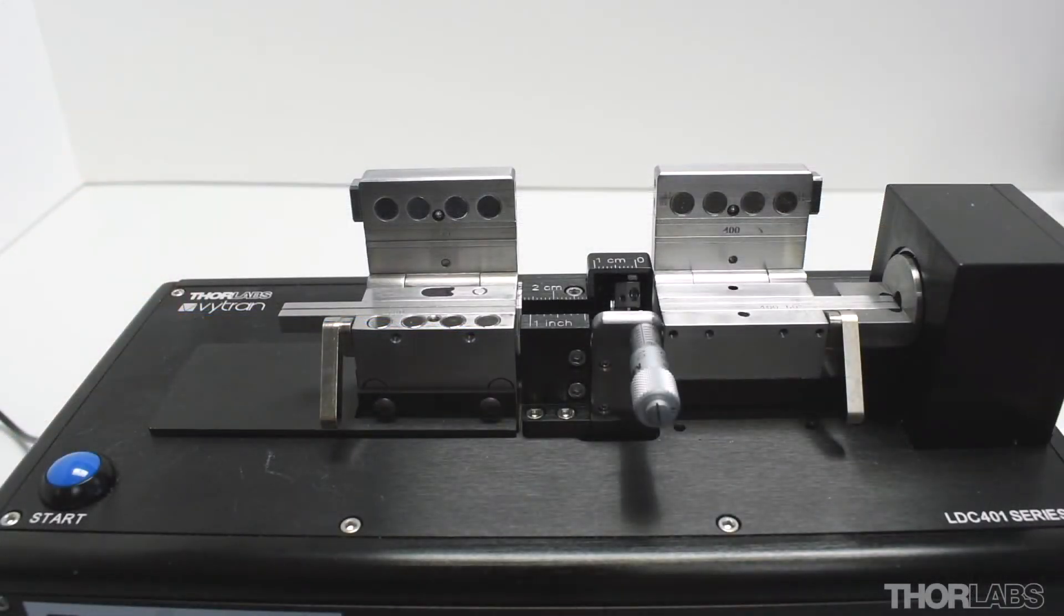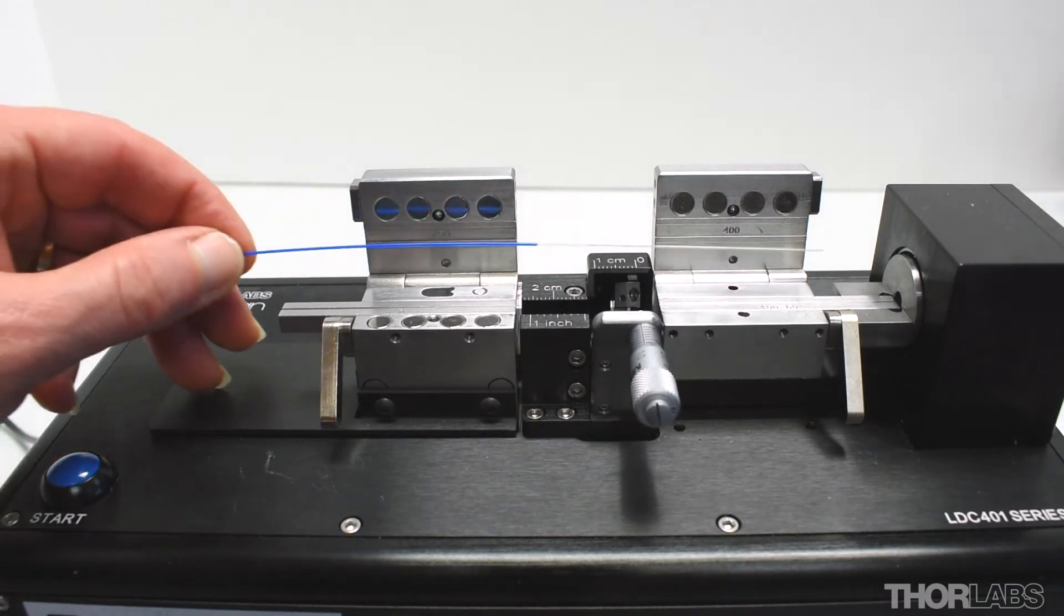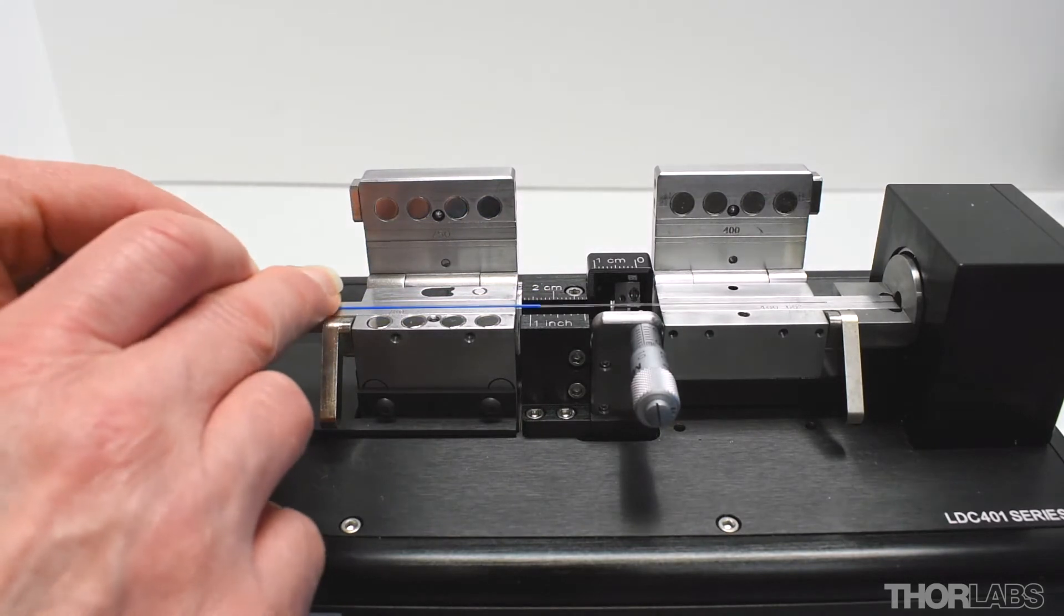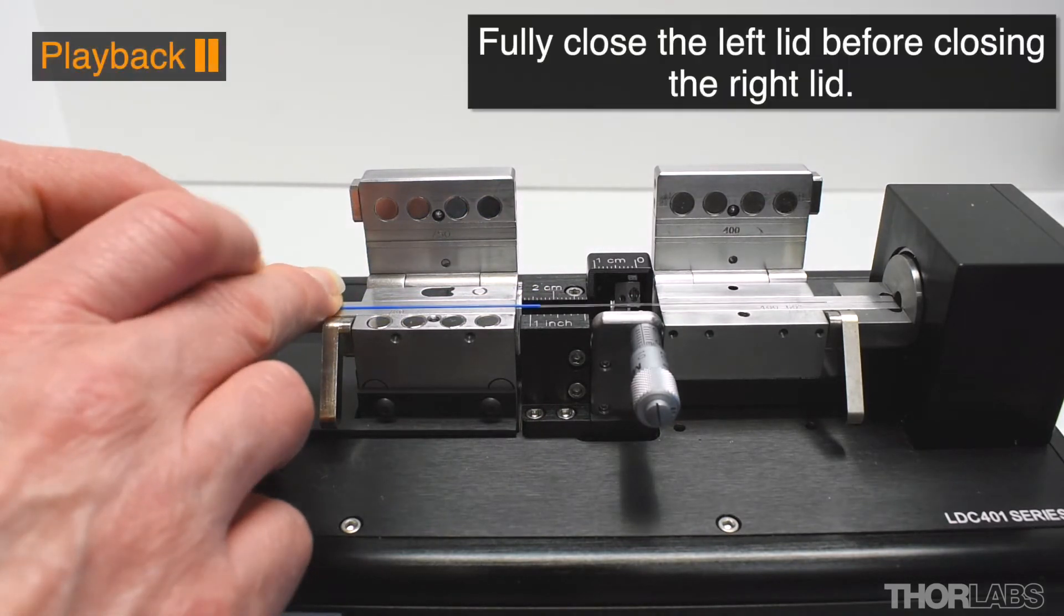If the cleave file has vacuum enabled, press the start button to initiate the vacuum and then lay the fiber into the V-groove of the inserts. The fiber holding block lids should always be closed left to right.